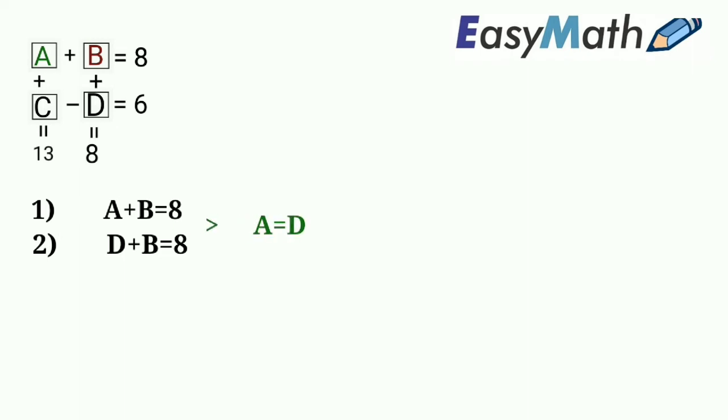The second row gives the equation C minus D is equal to 6 and the first column gives the equation A plus C is equal to 13.